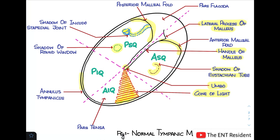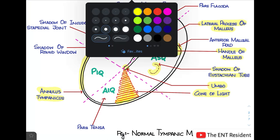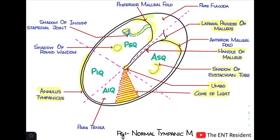This thick rim that you see all around the tympanic membrane is called the annulus tympanicus, which is the end of the tympanic membrane ending in a fibrocartilaginous ring. If someone were to ask you what are the two parts of the tympanic membrane, the answer would be: pars flaccida, which is the region above the anterior and posterior malleal folds, whereas the rest of it is known as the pars tensa.